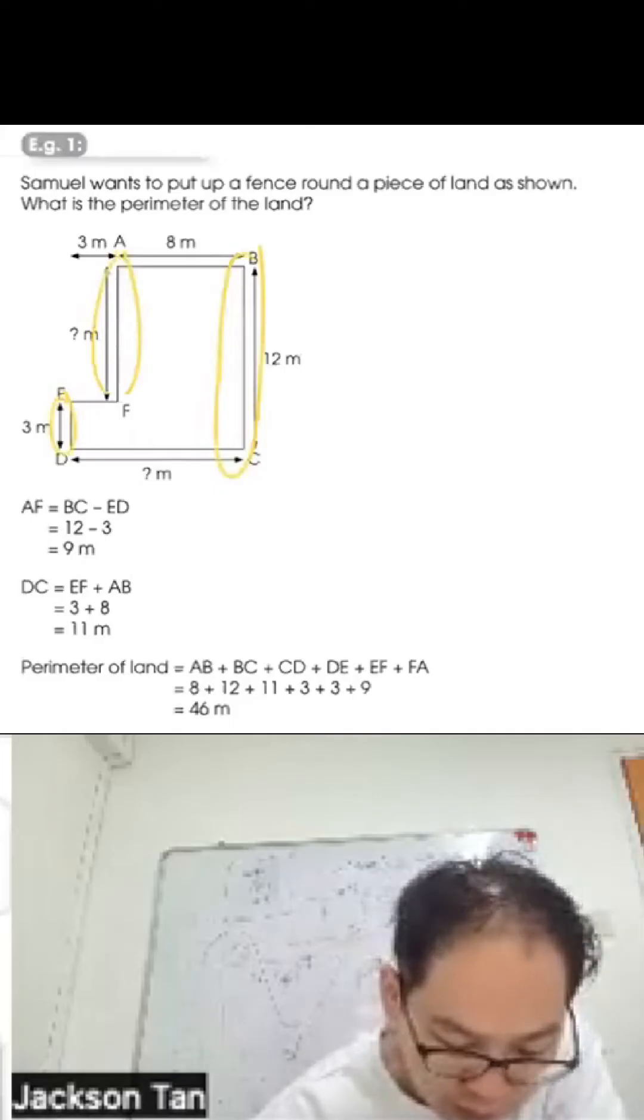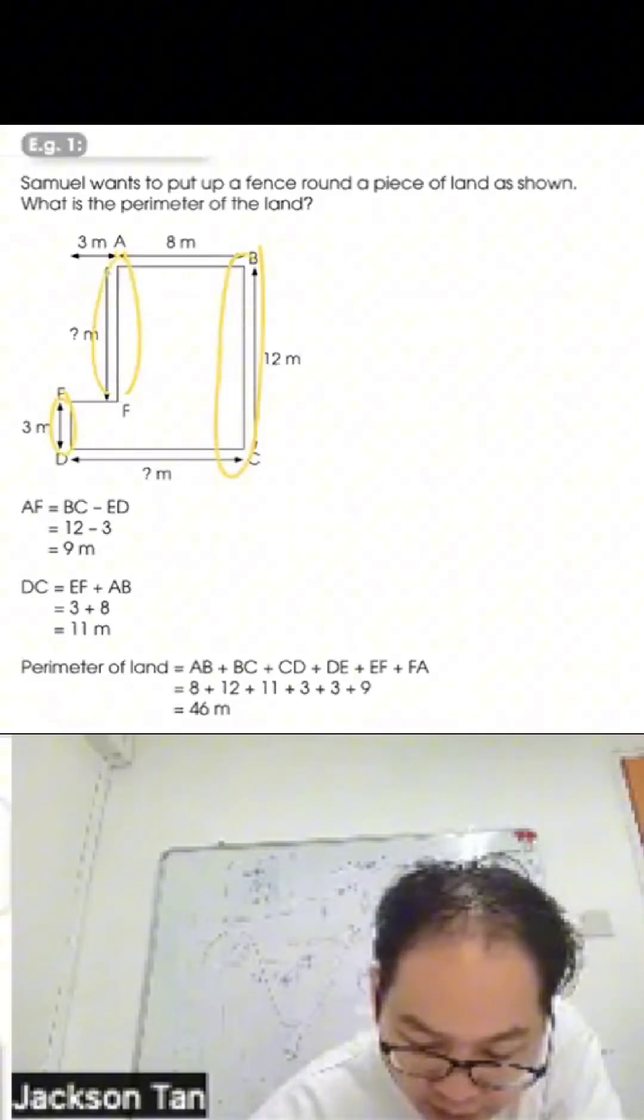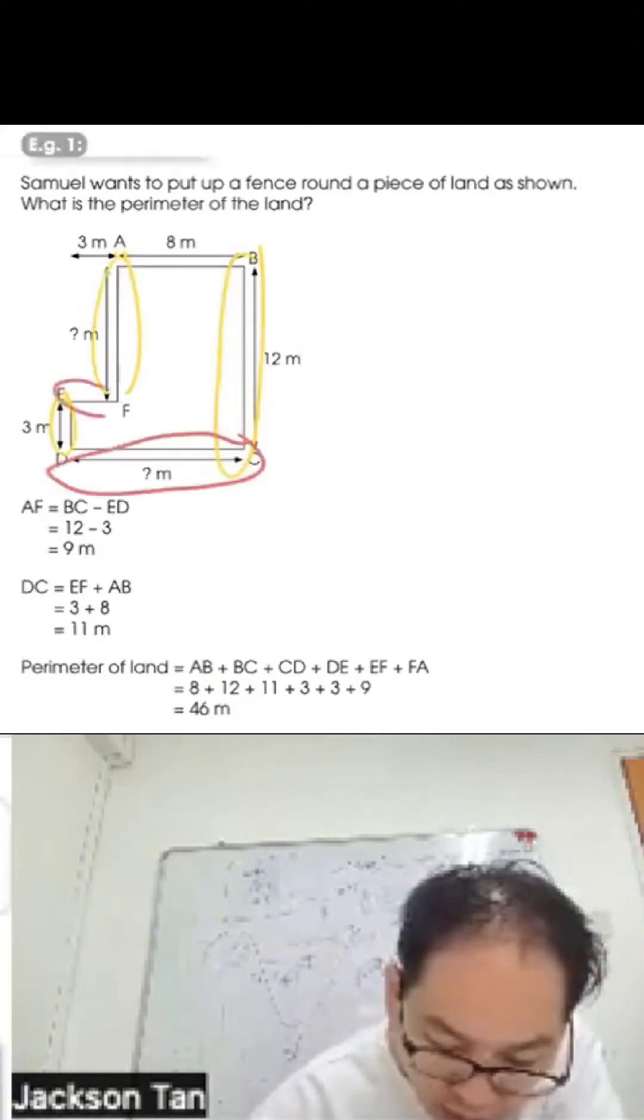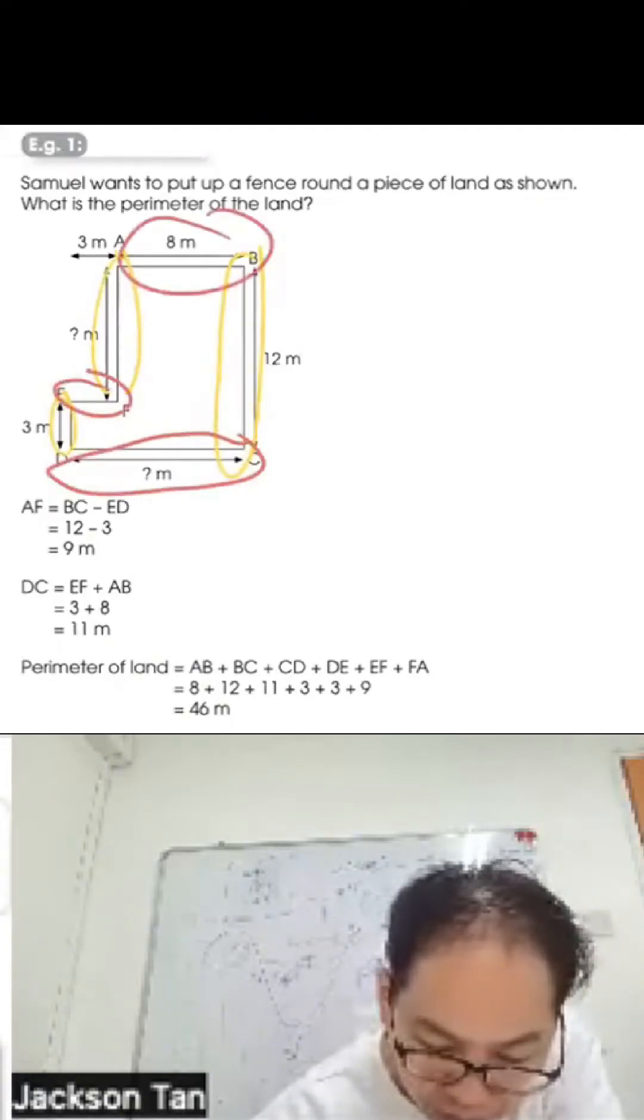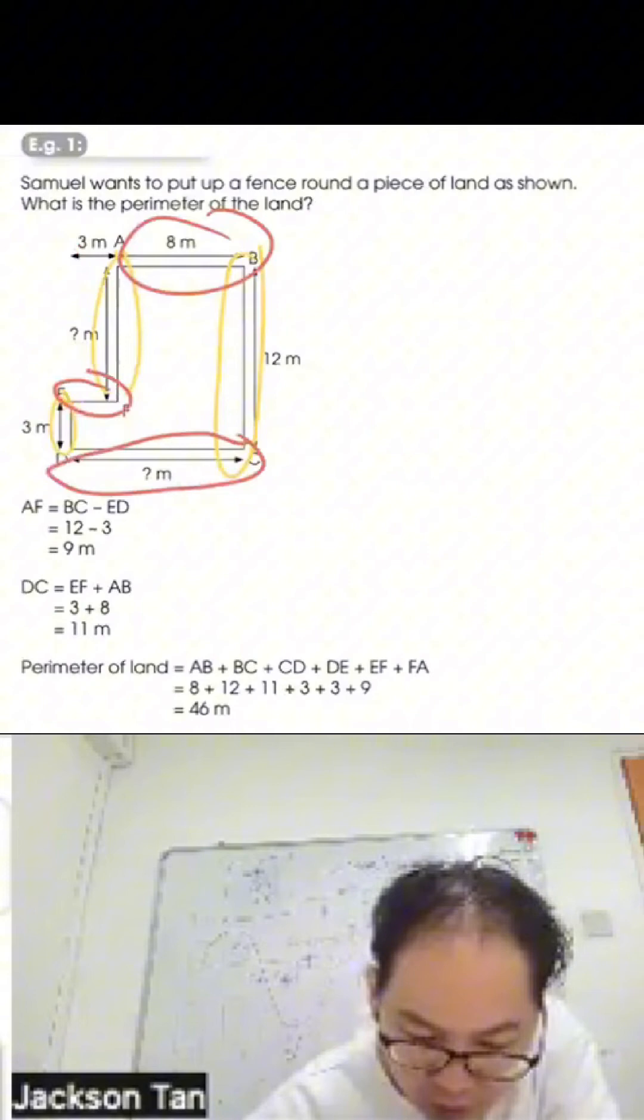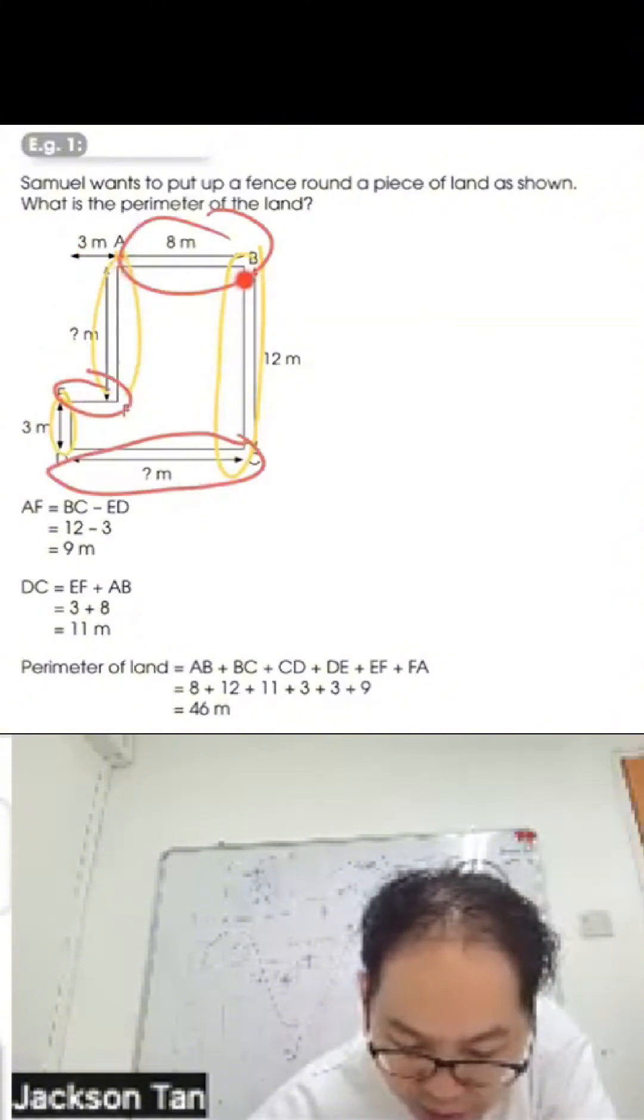Now we can find the perimeter. Starting from AB: 8 plus 12 plus 11 plus 3 plus 3 plus 9. The answer is 46 meters.